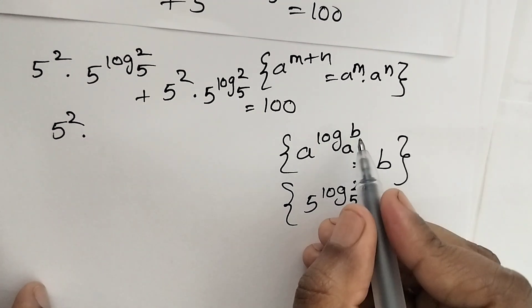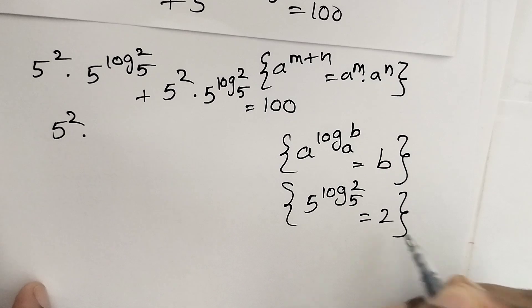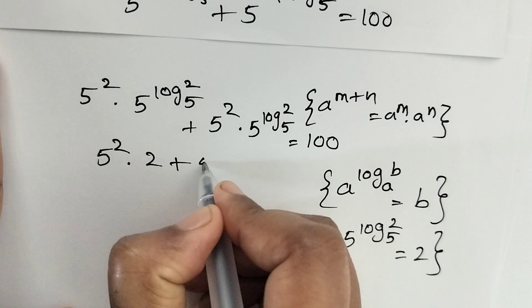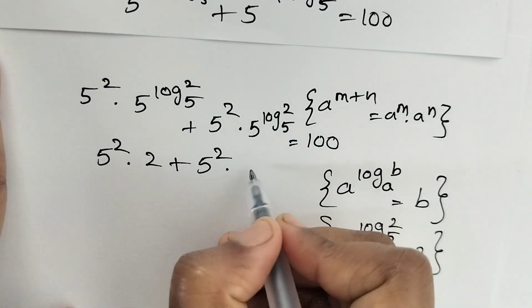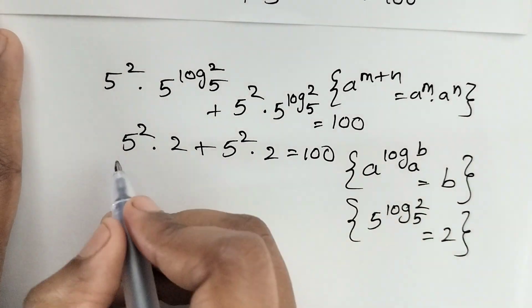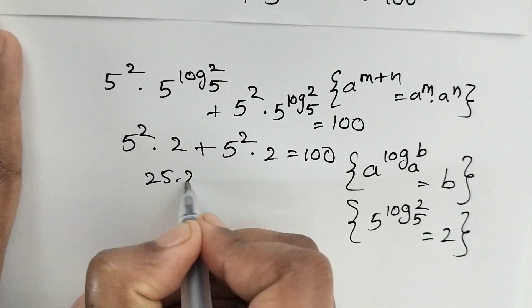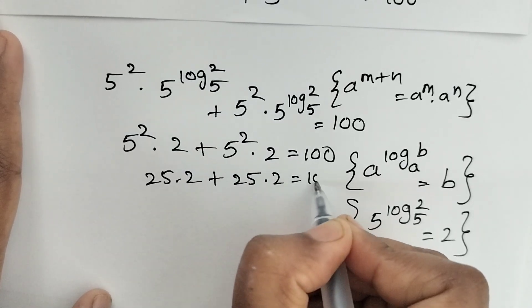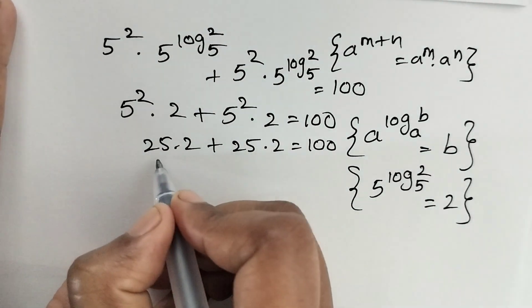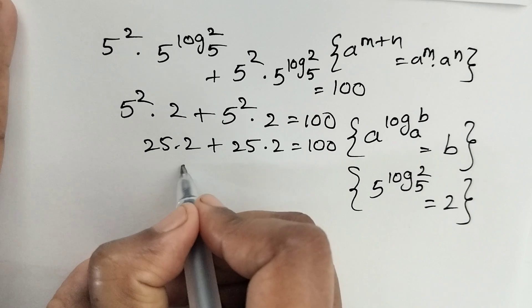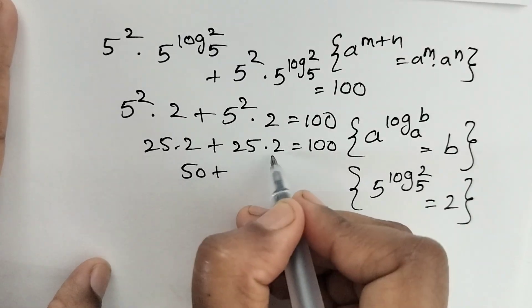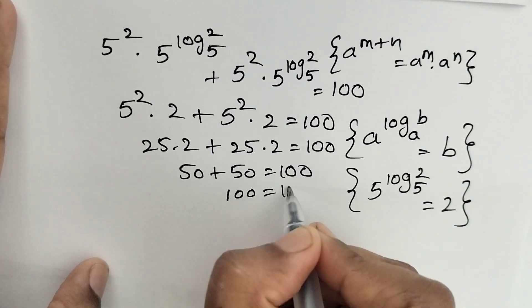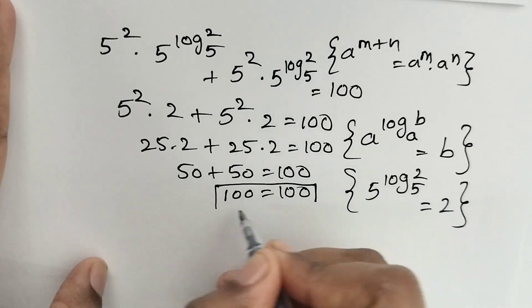Since 5 to the power of log of 2 to the base 5 equals 2, we substitute 2 in place of that term. So we get 5 squared times 2, plus 5 squared times 2, equals 100. That is 25 times 2 plus 25 times 2, which is 50 plus 50, equals 100. So LHS equals RHS.